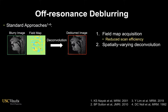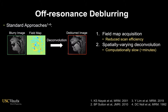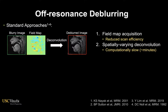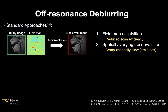Given the blurry image and the field map, the deconvolution procedure is usually performed but is typically computationally slow. These two types of limitations are not desirable for real-time MRI applications, where high scan efficiency and low latency processing are crucial.